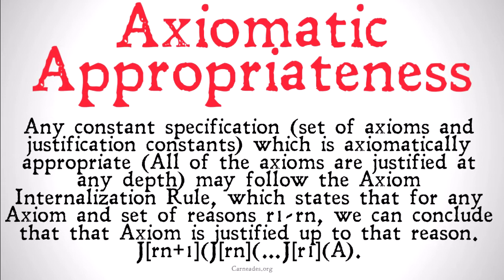As we learned in the last video, any constant specification — a set of axioms and justification constants — which is axiomatically appropriate, meaning all of the axioms are justified at any depth, may follow the axiom internalization rule. This rule states that for any axiom and set of reasons r1 through rn, we can conclude that that axiom is justified up to that reason and one further.